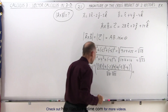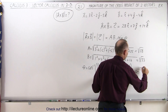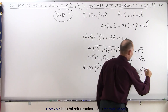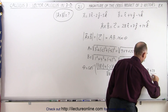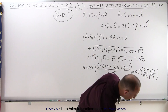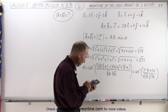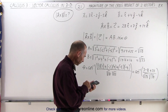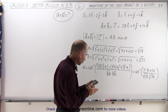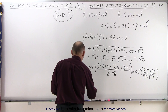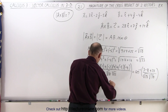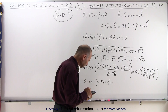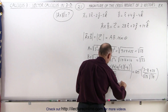Computing this: 3 times 1 is 3, minus 2 times 4 is minus 8, and minus 5 times minus 4 is plus 20, all divided by the square root of 33 times the square root of 38. That gives us 3 minus 8 plus 20, which is 15, divided by the square root of 33 times the square root of 38. This gives us the inverse cosine of 0.42359, and taking the inverse cosine gives us theta equal to 64.94 degrees.